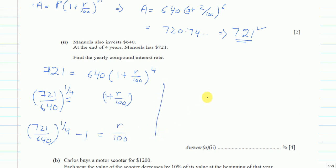Now for the final step, it will be 721 over 640 to the power 1 over 4 minus 1. This is divided 100. On the left-hand side it will be multiply by 100 equals R. And after using your calculator, you will get 3.024, 3.0240 and so on. To three significant figures it will be 3.02%.